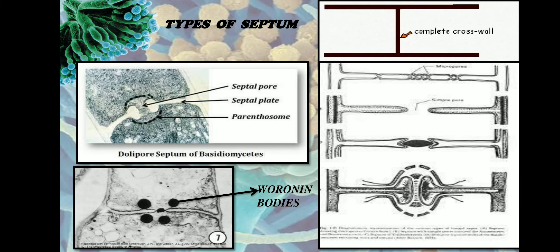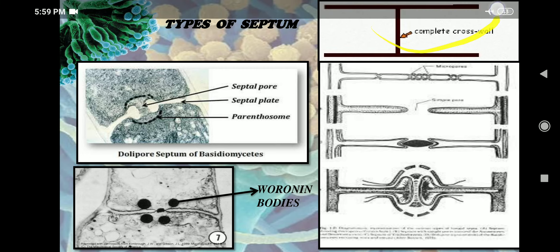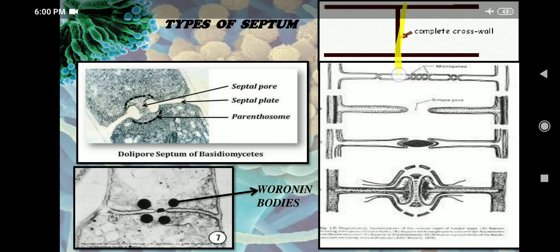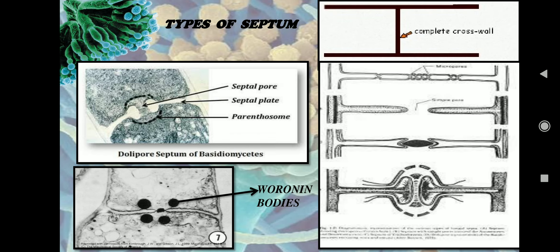Now let us see what are the different types of septum seen in fungal hyphae. The first type of septum is called complete septa — in this type, the septum is complete.